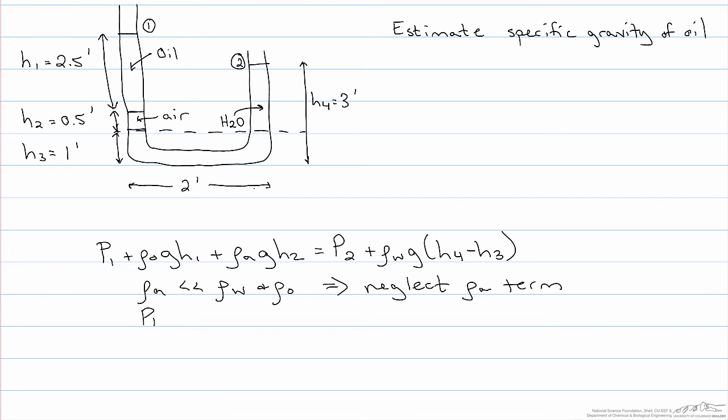Additionally, since both ends are open to the atmosphere, the pressure at point one is equal to the pressure at point two. So this simplifies the equation and allows us to solve for the specific gravity of the oil.